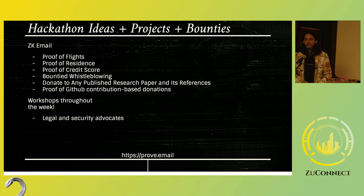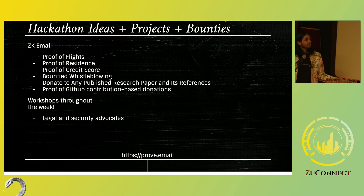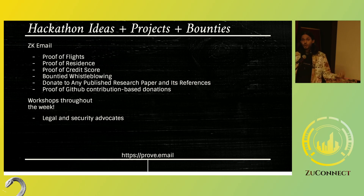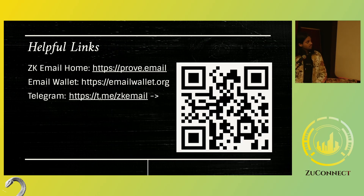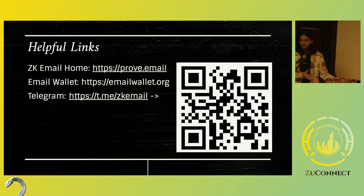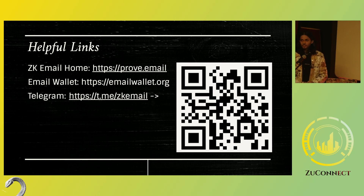We have a ton of workshops throughout the week for the technical side to help support people in building this. It's not just technical things — there's careful thought needed around legality and security. For instance, the ideal way to get DNS keys on-chain is to use DNSSEC, but very few websites support DNSSEC, so there's space for security lobbying to help websites support that and make the system more secure. We've also got a number of bounties for various projects. Here are some links: our homepage with links to the SDKs, docs, and all the demos; Email Wallet to test transactions on testnet now and mainnet soon; and Telegram for updates on workshops and new releases. Thank you so much.